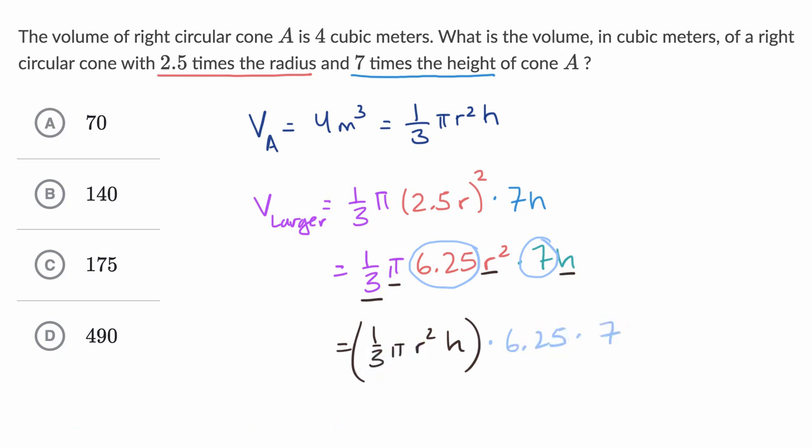Now we know what I have here in black. This is the volume of our original cone, which they told us is four cubic meters. So this is equal to four right over here. And so let's see, what's four times 6.25? This is going to be 24 plus one, so it's 25, times seven is going to be equal to 175 cubic meters, which is exactly what we have here for choice C.